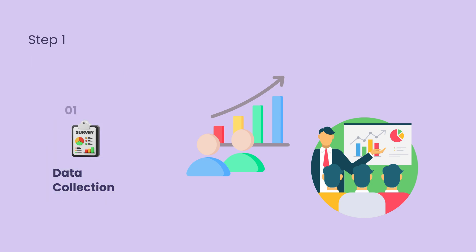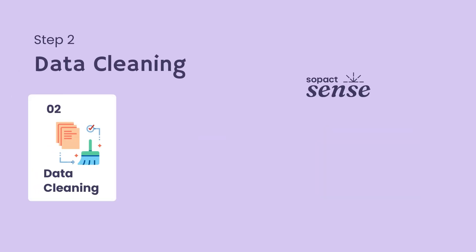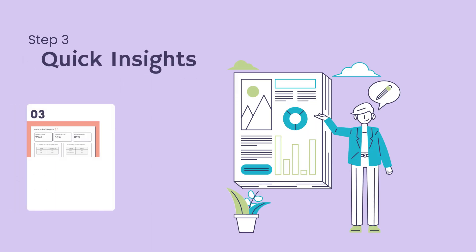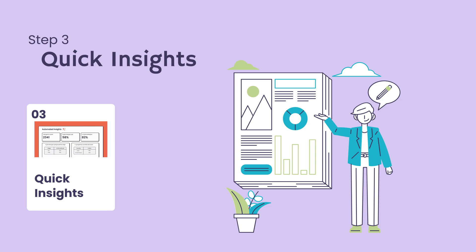Step 2 is data cleaning: follow good data hygiene. You can eliminate cleaning if you use a survey with proper data validation. For example, the SOPAC survey minimizes spelling mistakes or entering numbers in many different ways. Step 3 is quick insight: with SOPAC Sense, experience automated analysis that swiftly summarizes data features, making the analysis process efficient and insightful.